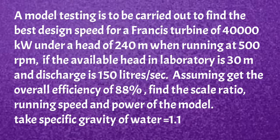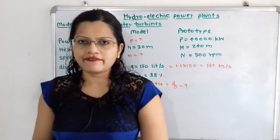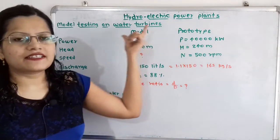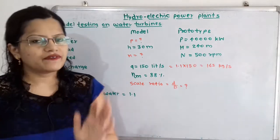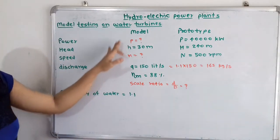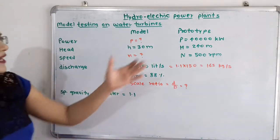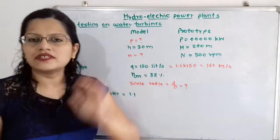Take specific gravity of water as 1.1. Now let us understand the given data. We will make two parts: data for the model and data for the prototype. We will use small letters for the model and capital letters for the prototype. The prototype is the actual unit and the model is geometrically similar to this prototype.